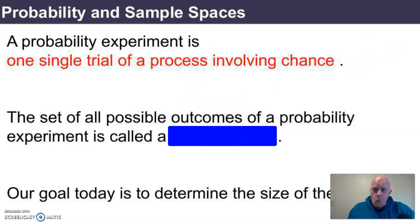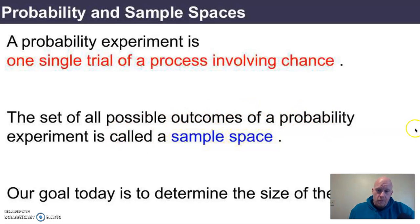Suppose I flip a coin, or suppose that I roll a pair of two dice numbered 1 through 6 on each, or spin a wheel. Each of those trials involves chance. And the set of all of the possible outcomes of a probability experiment is what we call a sample space.